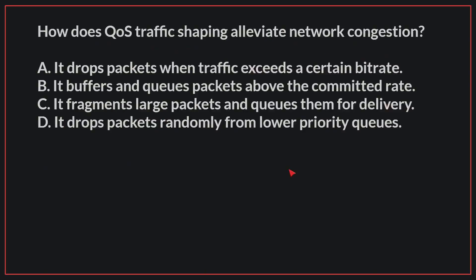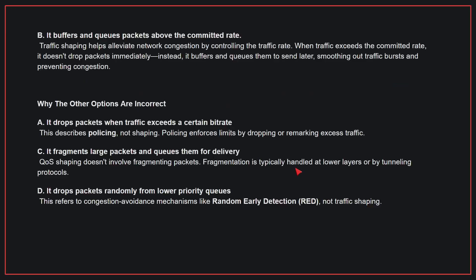How does QoS traffic shaping alleviate network congestion? The correct answer is B. Traffic shaping helps alleviate network congestion by controlling the traffic rate. When traffic exceeds the committed rate, it doesn't drop packets immediately — instead, it buffers and queues them to send later, smoothing out traffic bursts and preventing congestion.